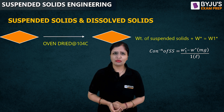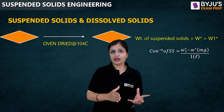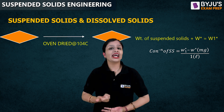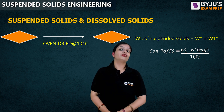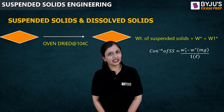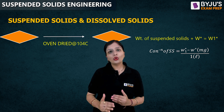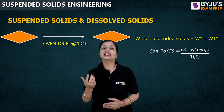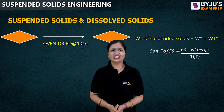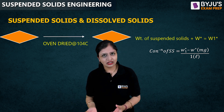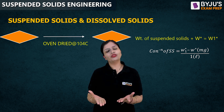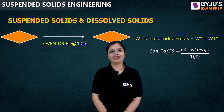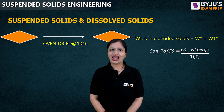You might ask: why is there a need for oven drying? Because even though suspended solids are on the filter paper, they would contain some water as well, and therefore oven drying is necessary. After that you get suspended solids plus the weight of the glass fiber filter. Just subtract the weight of the glass fiber filter W* and you get the weight of suspended solids. To get the concentration, divide by the volume of water sample taken — as simple as that.